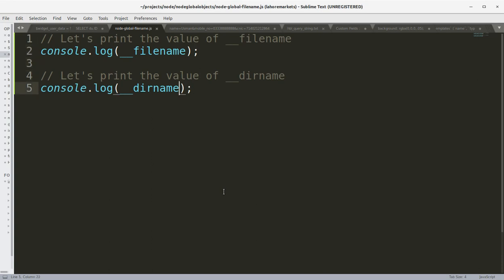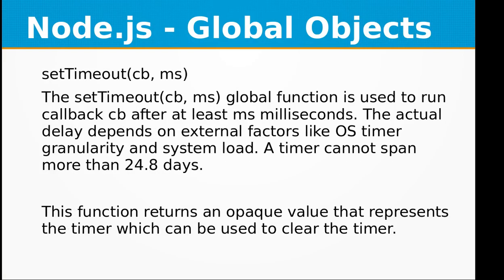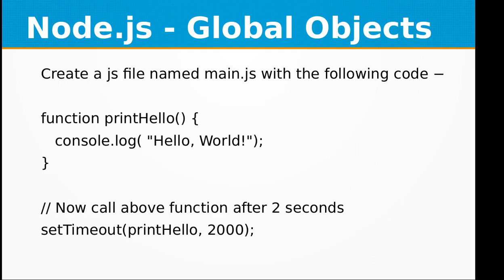The next global function is setTimeout. It is used to run a callback after at least the specified milliseconds. The actual delay depends on external factors like OS timer granularity and system load. A timer cannot span more than 24.8 days. This function returns an opaque value representing the timer, which can be used to clear the timer.